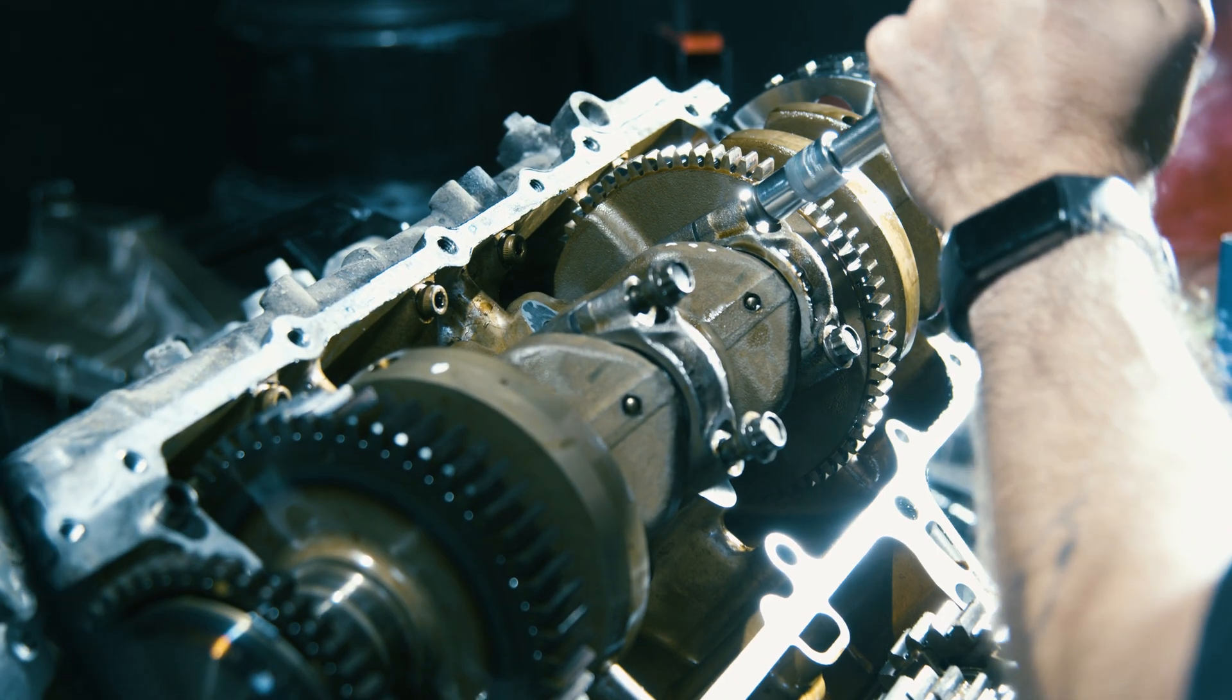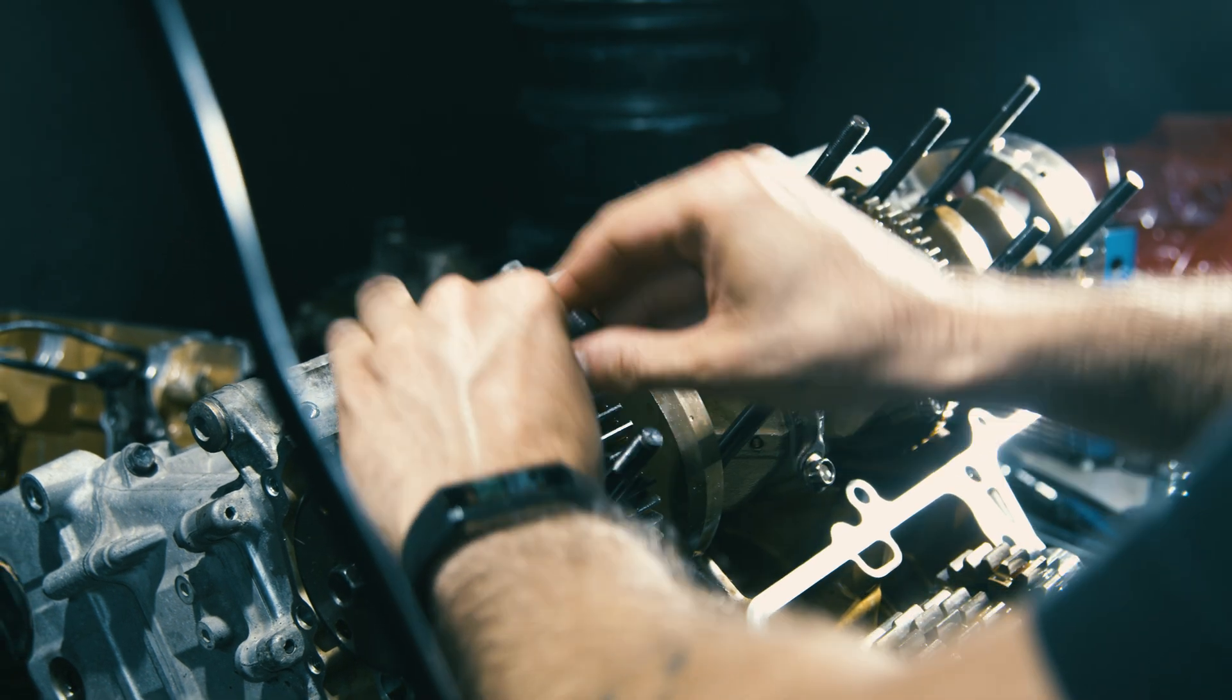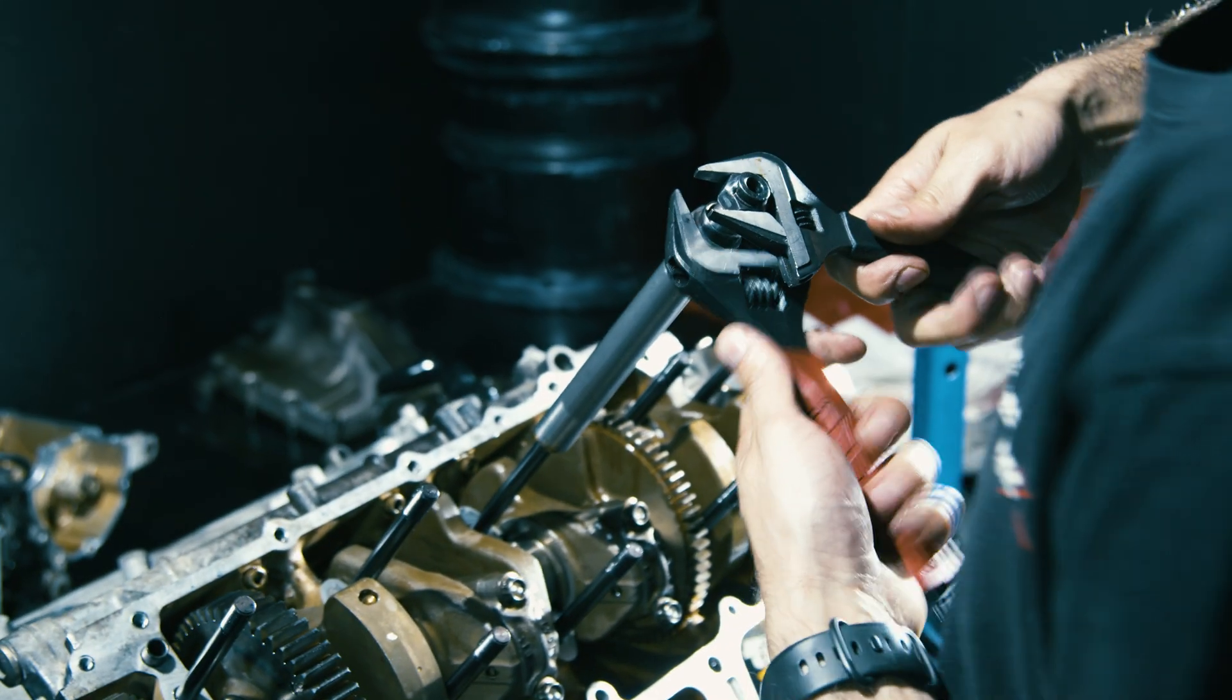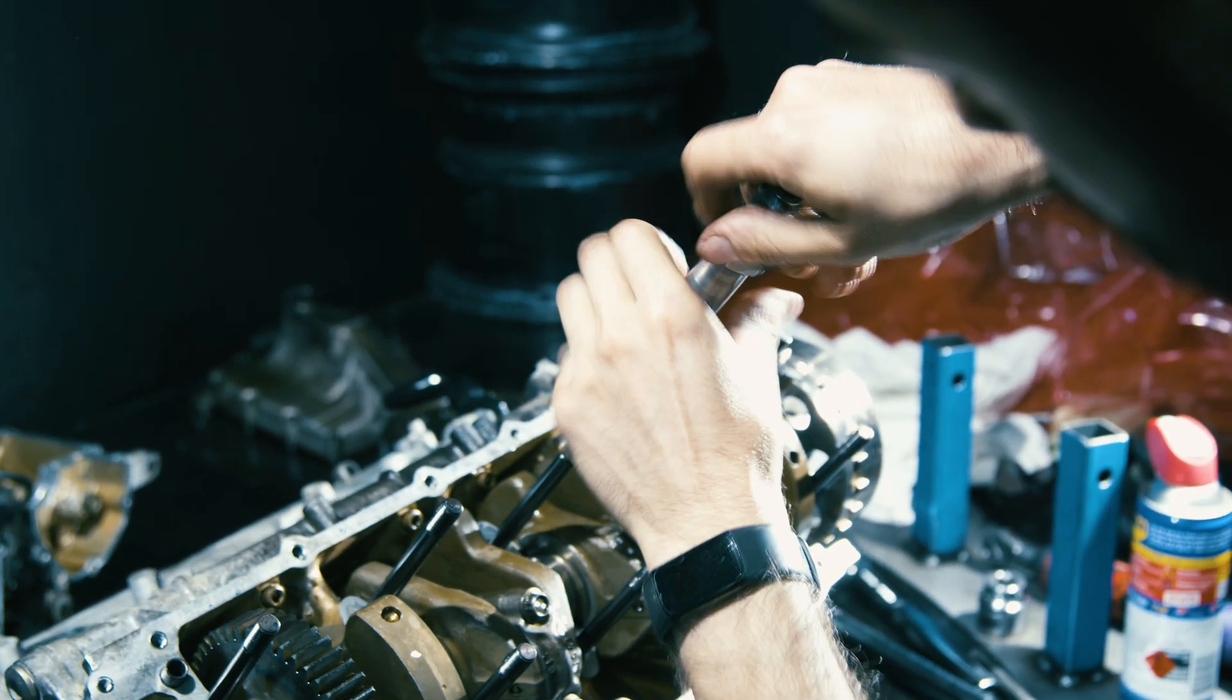The first thing is the case studs. This upgrade prevents the bottom end cases from flexing due to the increased sustained rpm experienced in a race car. Without this upgrade the cases have the potential to flex, allowing the main crank bearings to move, blocking the oil gallery and ending in tears.